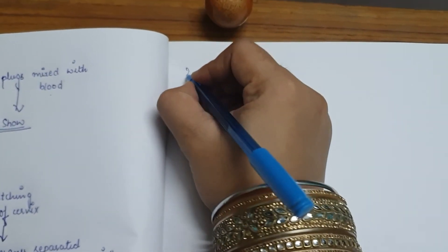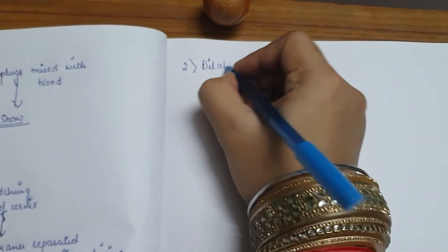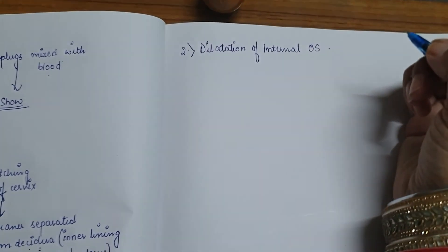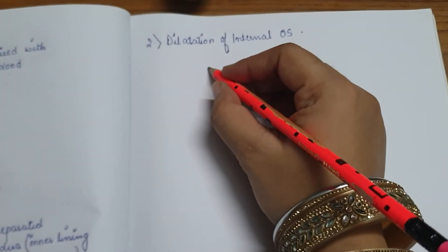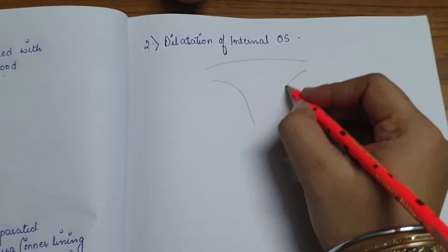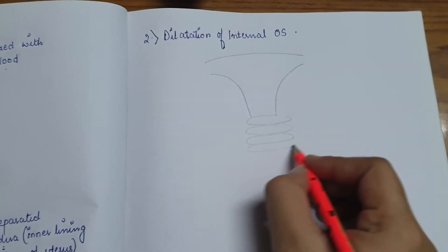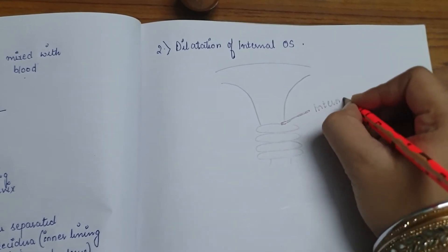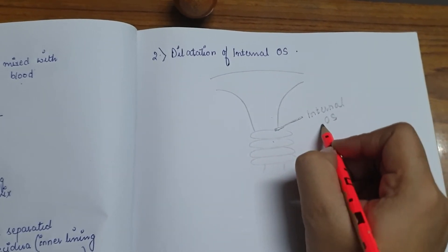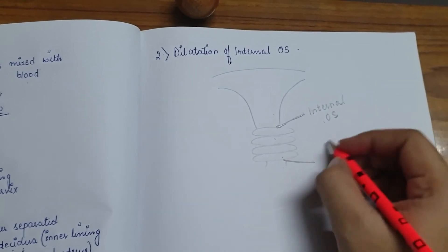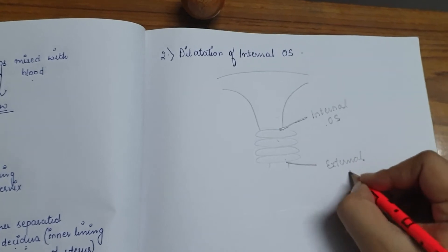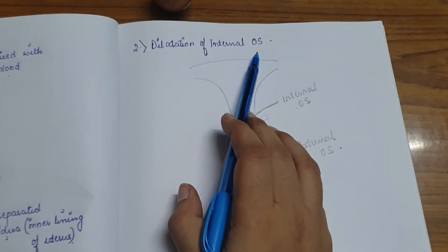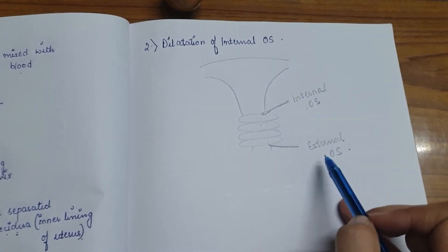The next sign is dilatation of the internal os. The internal os is the opening of the cervix into the uterus, while the external os is the opening of the cervix into the vagina. In this sign of pre-labor, there is dilatation of the internal os, and the internal os is dilated much more than the external os.